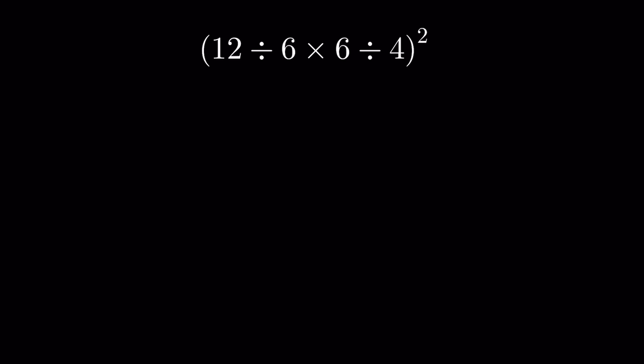The problem is: 12 divided by 6 times 6 divided by 4, the whole thing raised to the power of 2. How do you solve this? We start solving it using the order of operations. First, parenthesis is solved. There are three kinds: the smaller bracket, the curly bracket, and the box bracket. First the smaller bracket is solved, then curly brackets, and last the box bracket.